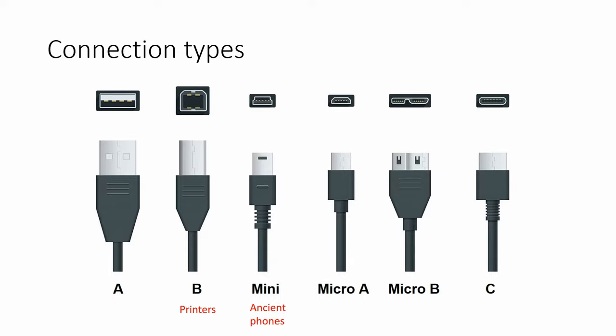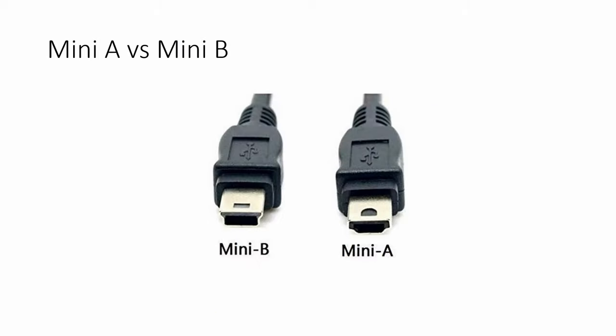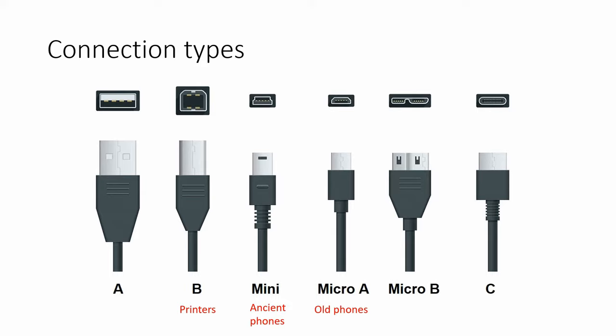Then you've got the mini series, which was used a lot for old phones. We had the mini A and B — you can see the mini A versus B here, and the B was the more commonly used one on old phones. We also have the micro A, which was used on some newer but still fairly old phones. Then the newest phones use Type C, which is also being used for many other devices as well.